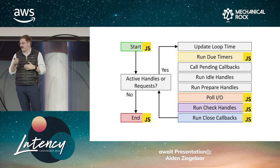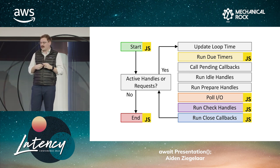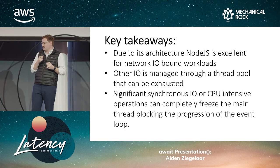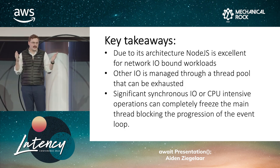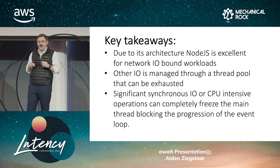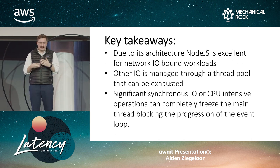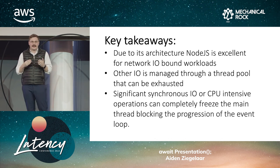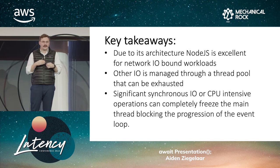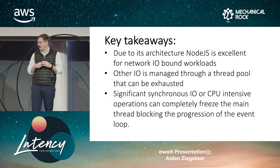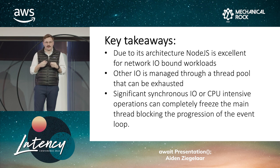So now we've gone through all the phases of the event loop. You should have a bit more of an understanding of exactly how Node.js is running in the background. If you're only going to remember a couple of things from this presentation, these are the key takeaways. Due to its architecture, if you have network I/O-bound workloads, then Node.js is an excellent choice for that. All other I/O — such as file I/O, DNS, compression, and that sort of stuff — is managed through a thread pool, and that thread pool can be exhausted, leading to some weird edge behavior. And finally, if you're doing significant synchronous I/O or CPU-intensive operations, you can actually completely freeze up the main thread, blocking the progression of the event loop — so that's also a gotcha to look out for.